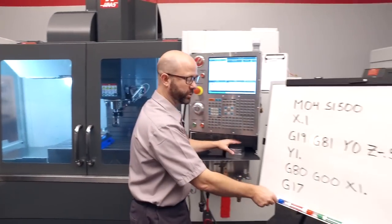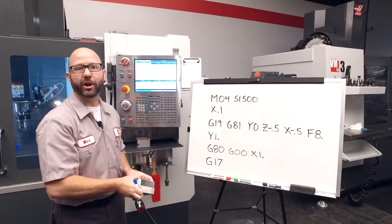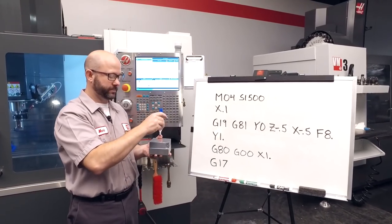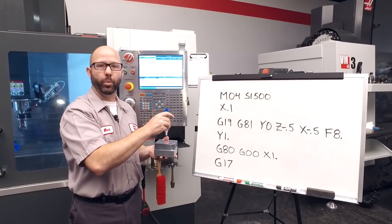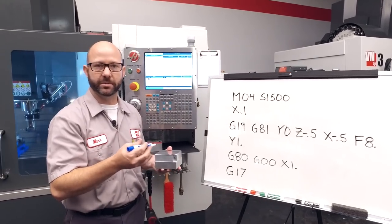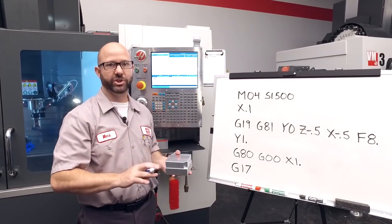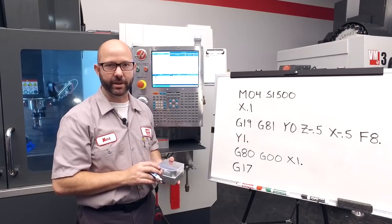Typically, when we're drilling a hole, we position our drill just above the part, let's say to Z.1. And that ends up being our starting position or our clearance plane. For more information, check out the G98, G99 video.